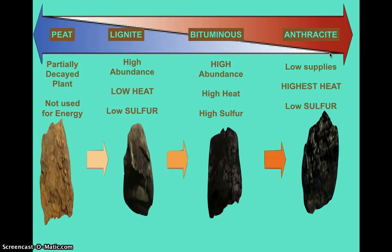Bituminous is actually the most abundant of the coal stages. It does produce a good amount of heat — better than lignite, not as good as anthracite — but it has a lot of sulfur. So the most used form of coal produces the most sulfur. Anthracite is not easily accessible and there's less of it on Earth. It is the highest heat producer and has low sulfur content.